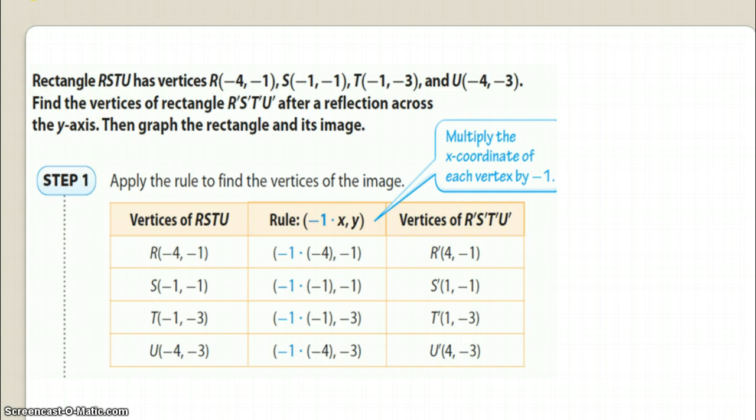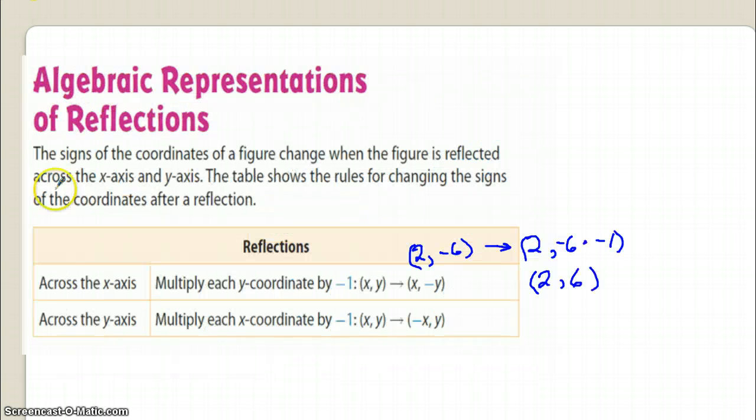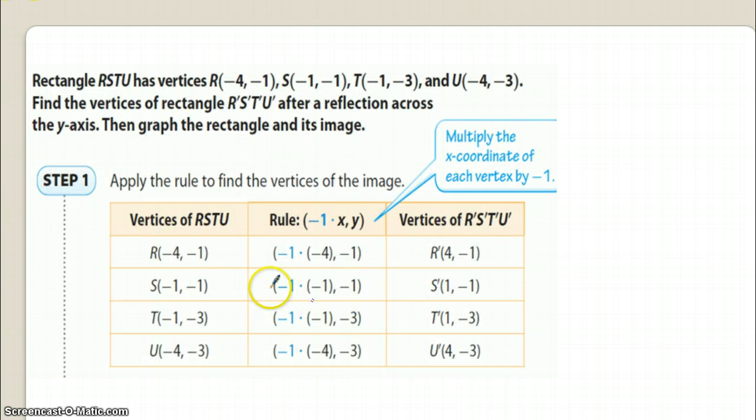So what do the rules tell us if we're reflecting across the y-axis? It says if you're going across the y-axis, then you multiply the x-coordinates, or you change the signs of the x-coordinates. Okay, so let's go back and see exactly what they did.